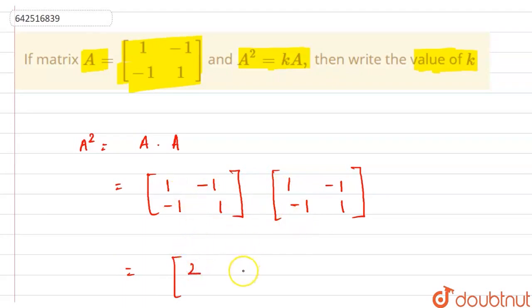This is the second element here. We will have 1 times minus 1, which will be minus 1, plus minus 1 times 1. So this will be minus 1. So minus 1 minus 1, this will be minus 2.